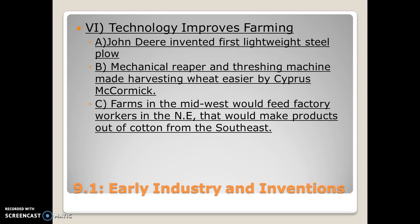Cyrus McCormick invented the mechanical reaper and the threshing machine, which made harvesting much easier. Think of the Grim Reaper's scythe — a mechanical reaper attached several of those blades to a circular cylinder to cut down all the wheat in an area, while the threshing machine collected that wheat and separated the stock from the grain. This made farms in the Midwest able to feed factory workers in the Northeast, while the Northeast made items for the West and Southeast, and the Southeast sent cotton and tobacco to New England to be manufactured.